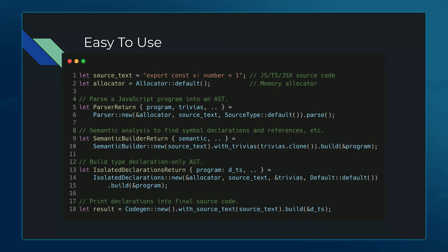Each tool we have uses a builder pattern. You stick in some source code, some information — is it JavaScript, is it TypeScript, maybe the output of another tool — and you can chain these together. In about 18 lines of code, you can generate DTS files.